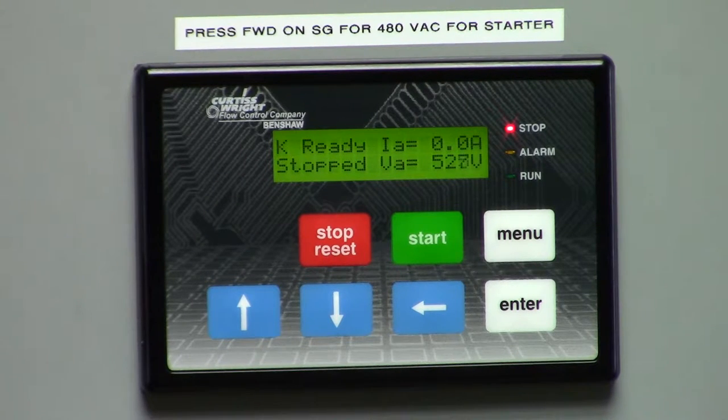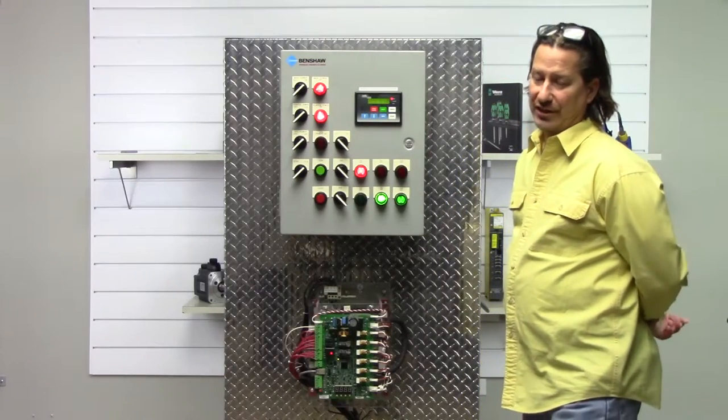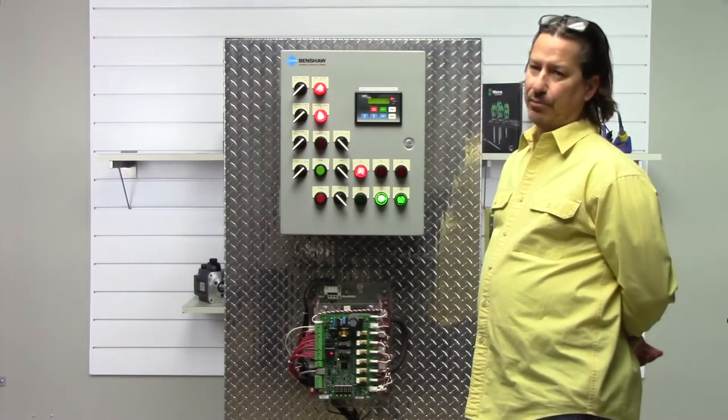As you can see right now, it says that it's in a ready mode, it's stopped, and it's also showing amps average on the top right-hand corner and voltage average on the lower right-hand corner. The voltage is the actual voltage that's feeding the starter, not what it's putting out.